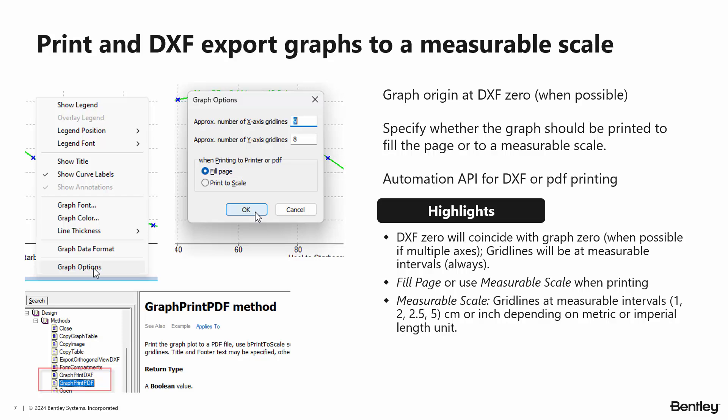We've always had the feature of being able to print to a specific scale, but we've made this a little bit easier to access. If you go to the graph options by right-clicking in the graph window, you can choose to print either filling the page or print to a scale. If you choose print to scale, the grid lines will be at measurable intervals of one, two, two and a half, or five centimeters or inches, depending on whether you have metric or imperial length units selected.